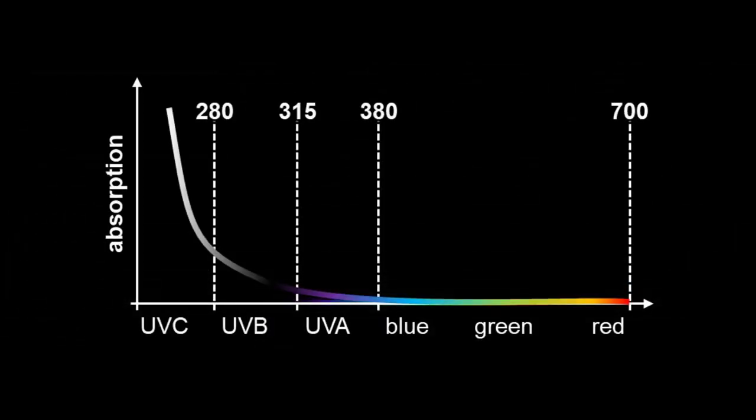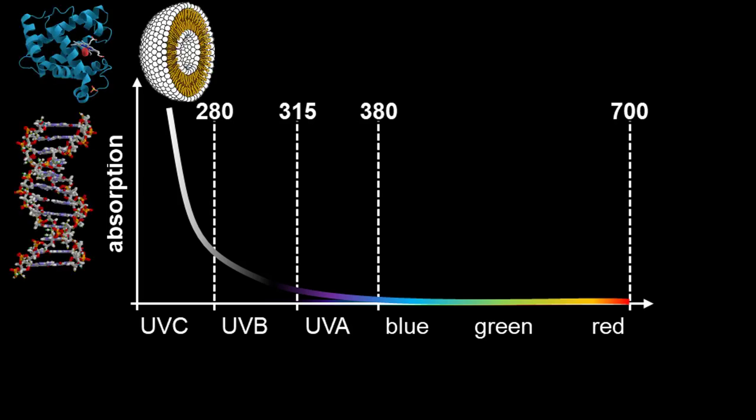Absorption increases as wavelength decreases, with a pronounced spike as we reach the UV-C. This absorption increase is largely due to nucleic acids and proteins, which have absorption peaks at 260 nanometers and 280 nanometers respectively.